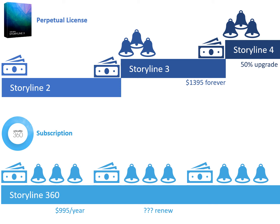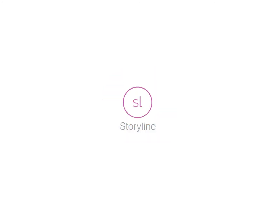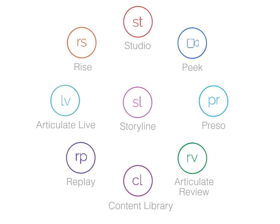The other major difference is that with Storyline 360 you are actually purchasing the full course authoring tools — Articulate 360 — which contains, in addition to Storyline, a suite of tools that you don't get with the perpetual license. Storyline, Studio, and Rise are all full course authoring tools.